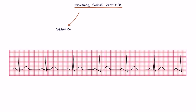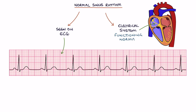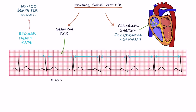Sinus rhythm is seen on an ECG when the electrical system in the heart is functioning normally. It involves a regular heart rate between 60 to 100 beats per minute. Each beat is represented by a P wave, QRS complex, and T wave, and in this video we're going to go into detail on all of these features of the ECG.